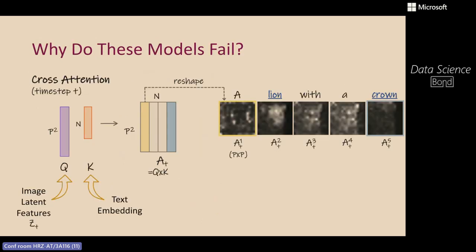In practice, we modify the latent ZT. The cross-attention mechanism takes queries and keys, and the queries are a projection of ZT. We shift ZT using the gradient of a loss function that we define. Shifting ZT effectively shifts the queries and the values in the attention matrix. So we shift ZT to encourage it to attend to the neglected subject — in this case, 'crown.'